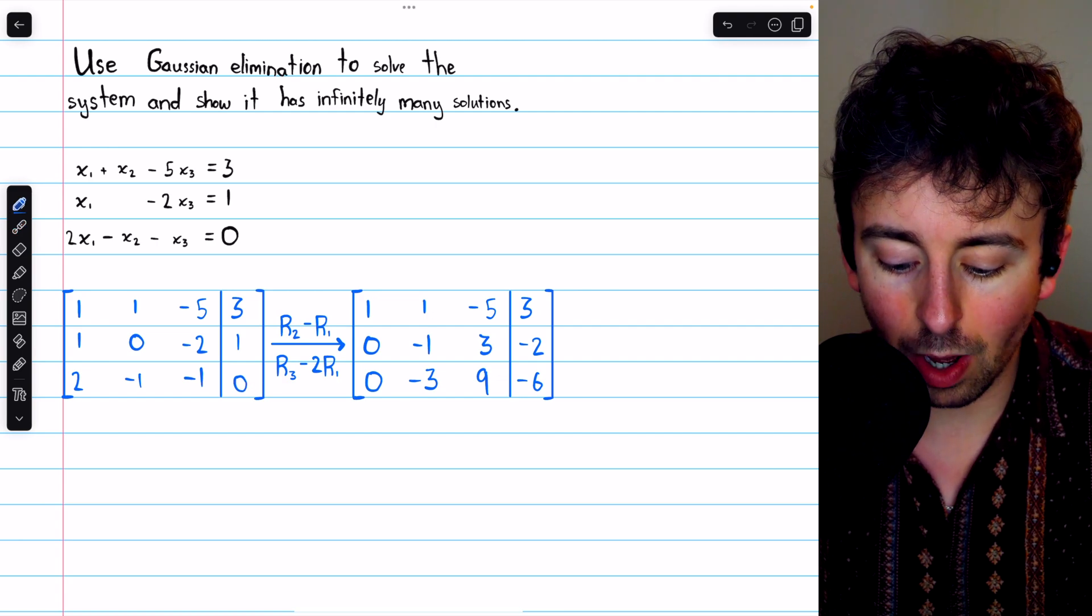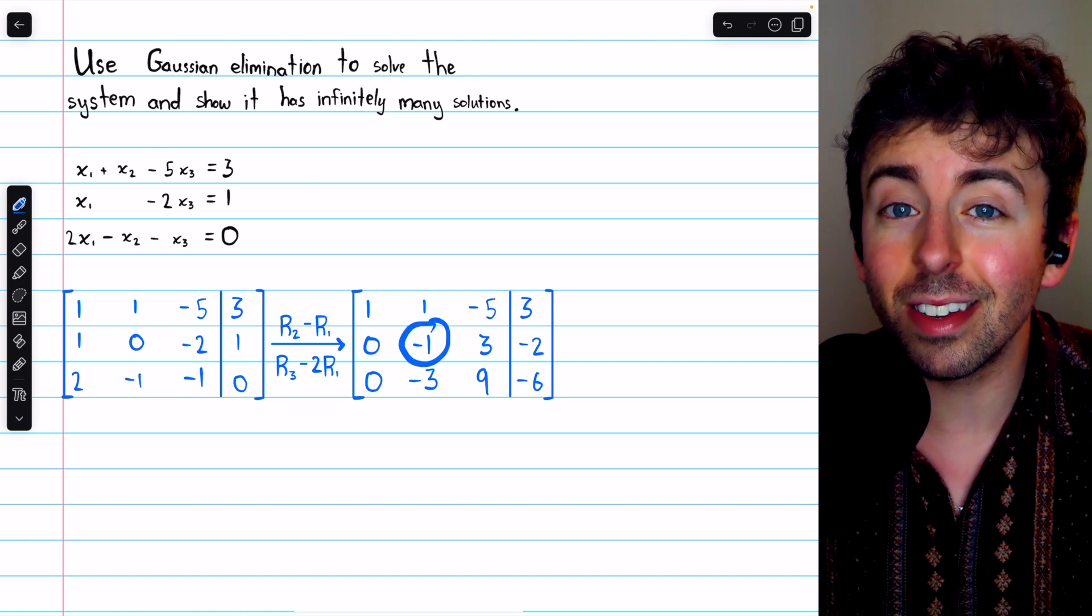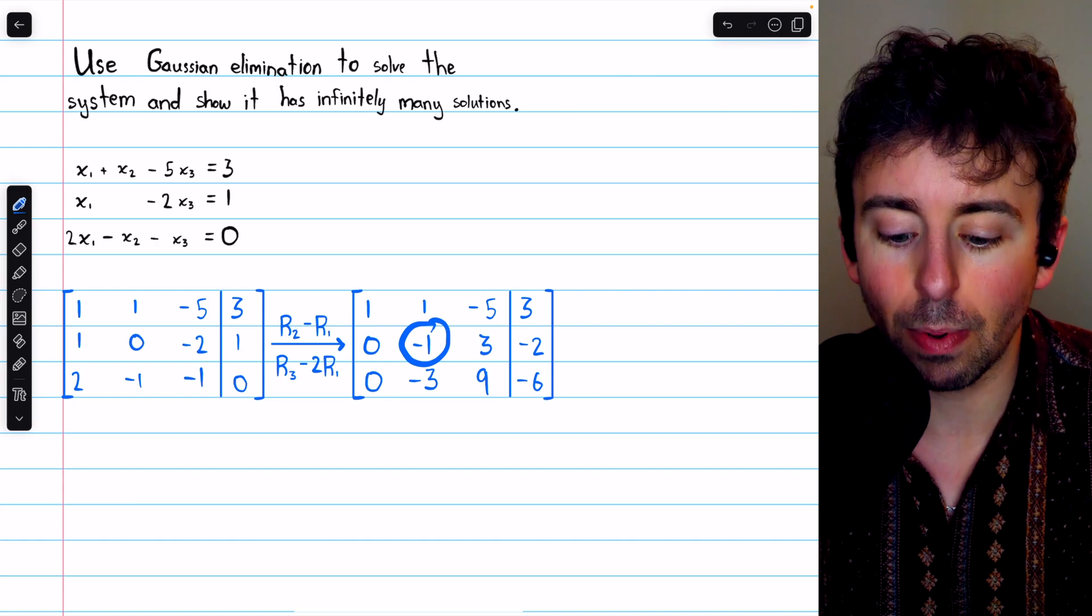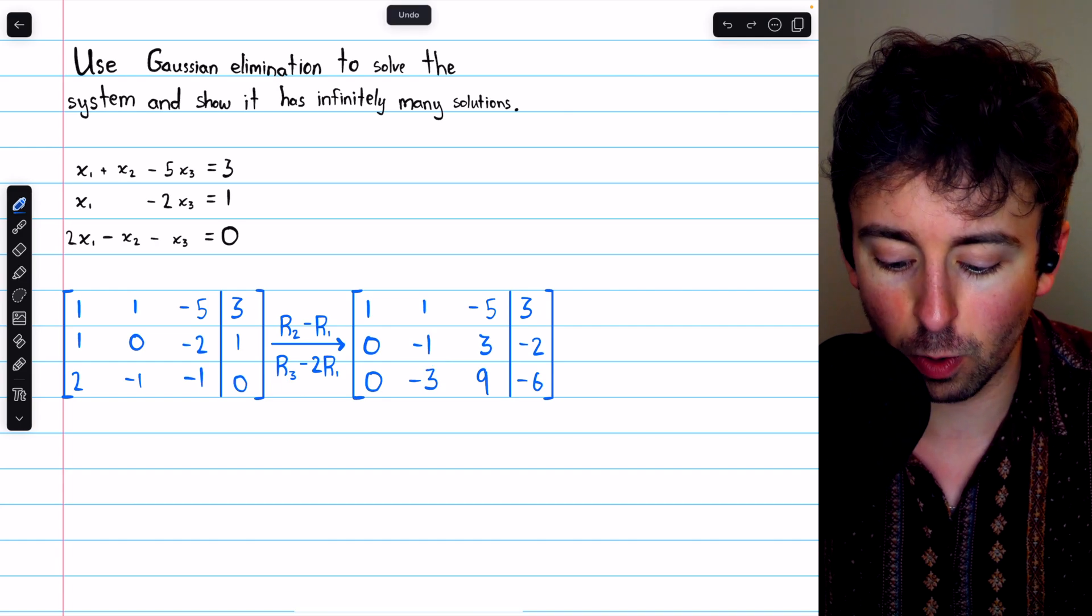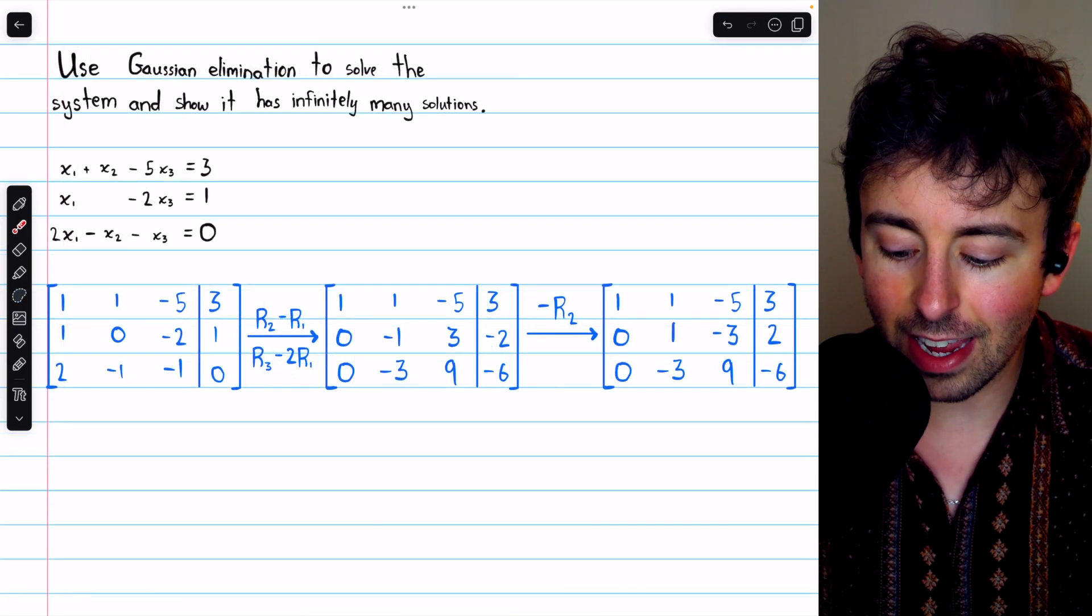All right, now we want the leading entry in row two to be positive one. Right now it's negative one, so we'll just multiply row two by negative one, negating all the entries, and so this leading entry will become positive one. That gets us here.